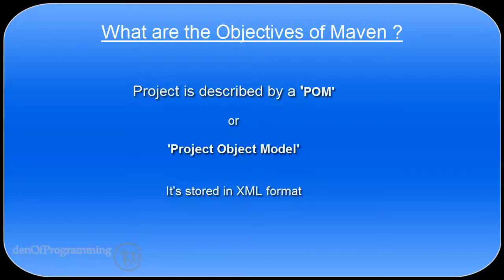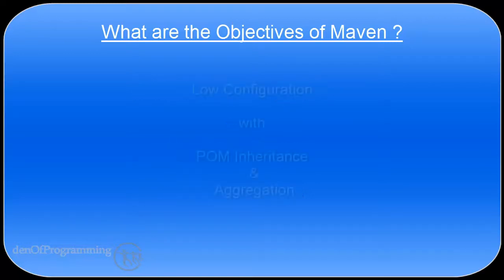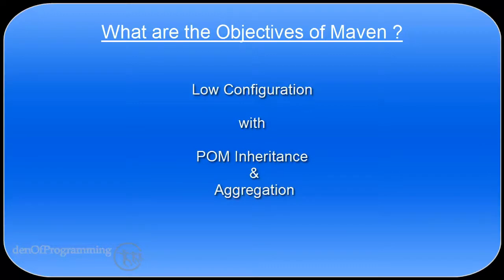A Maven project will always contain a POM and currently it's represented as XML. The POM.xml file is a single configuration file that contains a majority of information required to build that particular project. On some projects the POM can become very large, but there are a number of techniques we can apply to the configuration held within the POM allowing that to be reused. These techniques are similar to the ones we deploy in Java such as inheritance and aggregation.